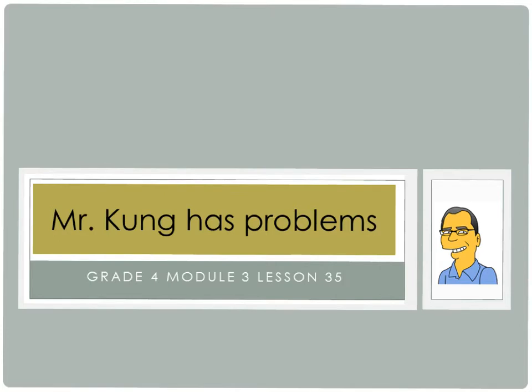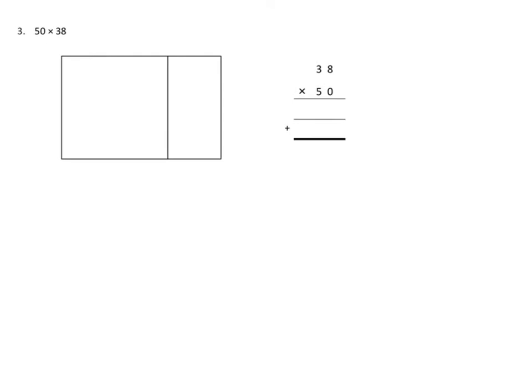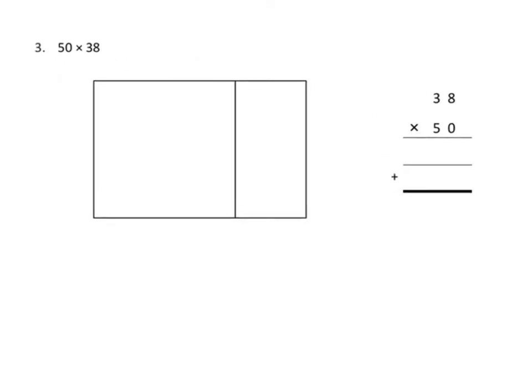Let's take a look at problem number 3, where we're going to be multiplying 50 times 38. One of the things we can do with the area model is that we can break down these numbers into numbers that work better for us. We're able to break down 38 into its pieces, so that's 3 tens, 30, and 8 ones. And then the 50 is just on the side.